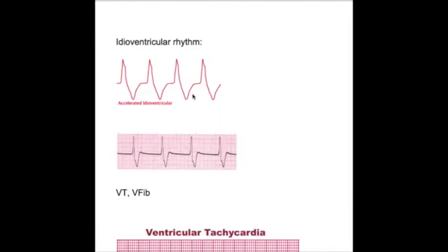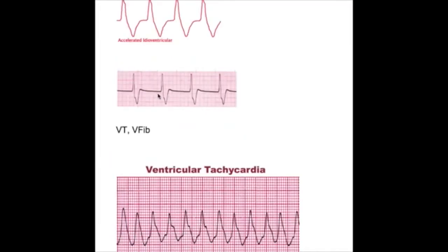The rate is 20 to 40 beats per minute normally in idioventricular rhythm. PVC is premature ventricular contraction. There is no preceding P wave. Whenever there is a premature ventricular contraction, there is no P wave before that.